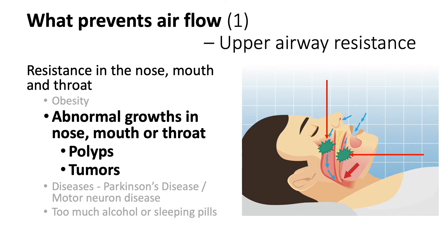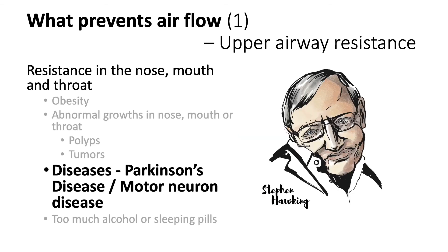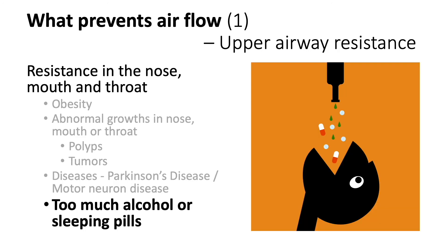For example, nasal polyps, vocal cord polyps, or tumours in the throat. Some diseases, such as Parkinson's disease or motor neuron disease, affect the normal movement of the tongue, the swallowing muscles, and the vocal cords. If we drink too much alcohol or overdose on sleeping pills, the upper airway passage may become very floppy and collapse.